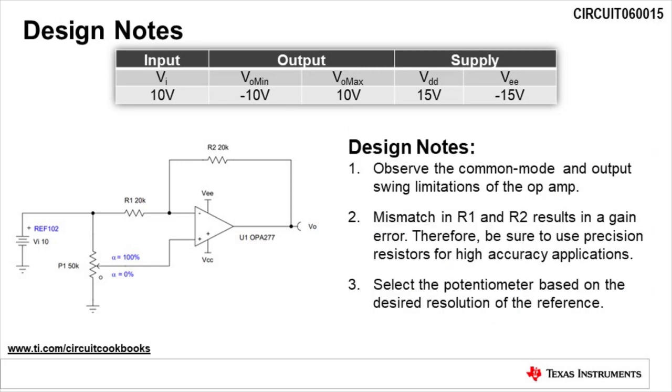When designing an adjustable reference voltage circuit, there are a few design notes to be aware of. First, be sure to observe the common mode and output swing limitations of the op amp.